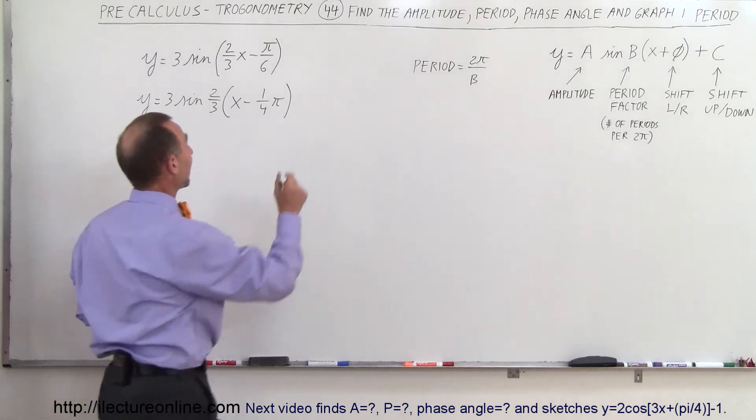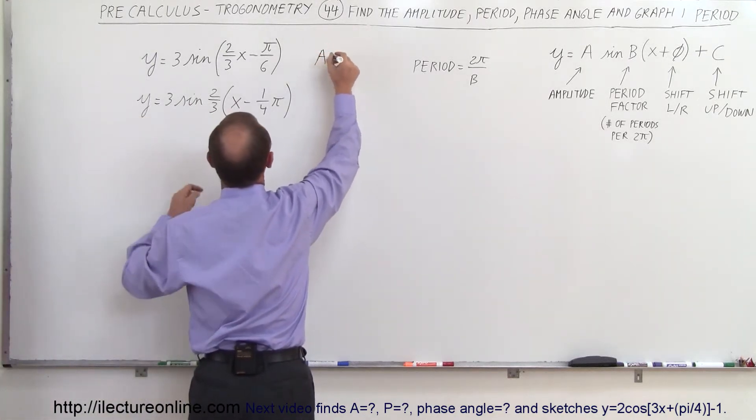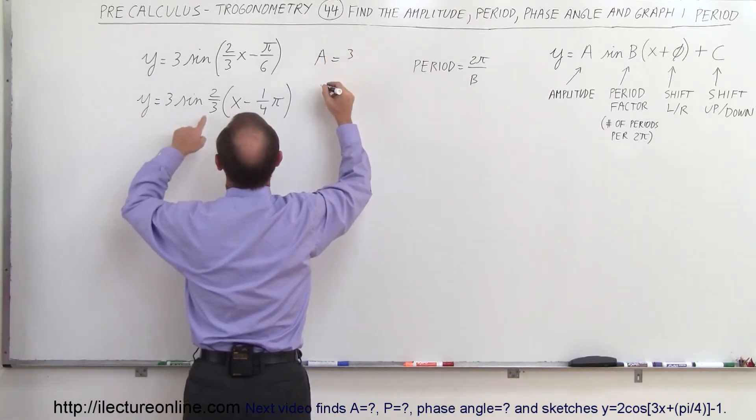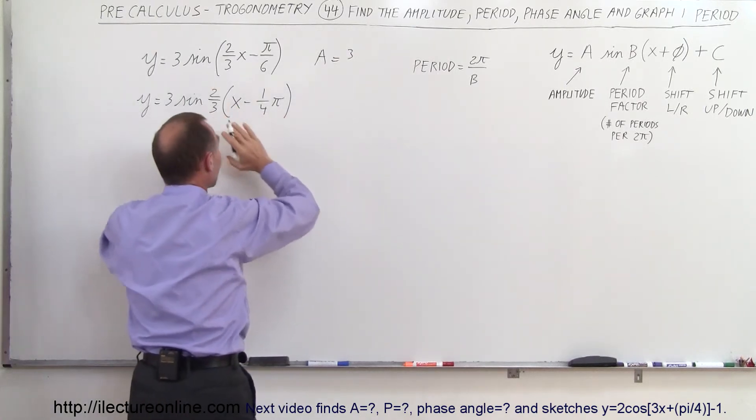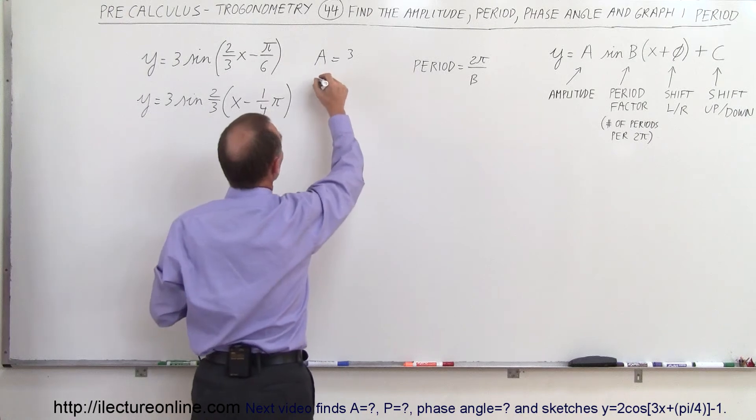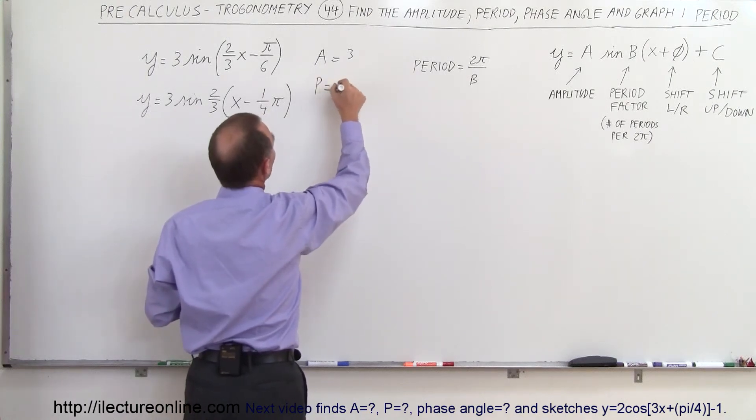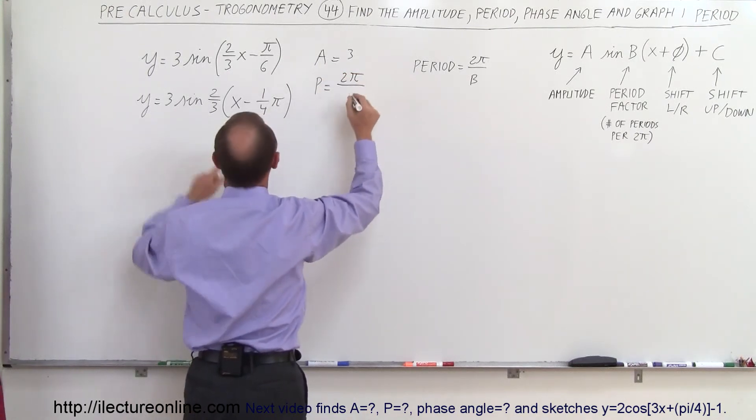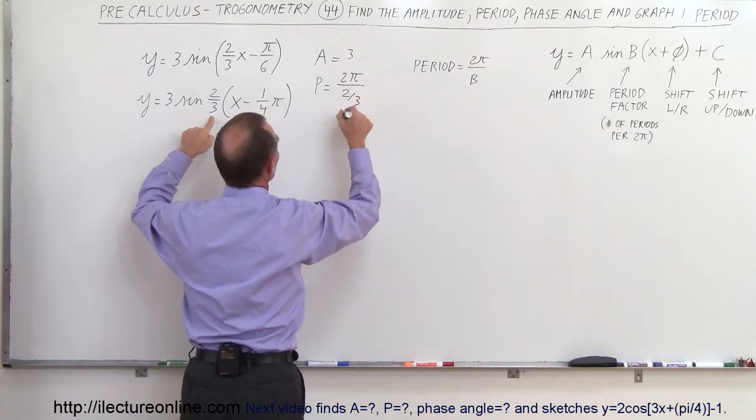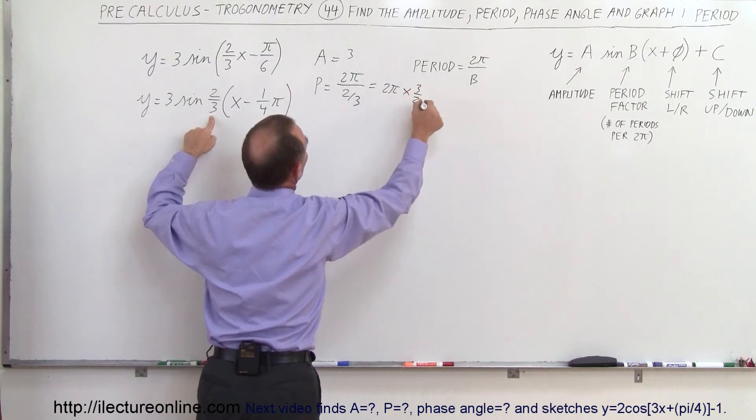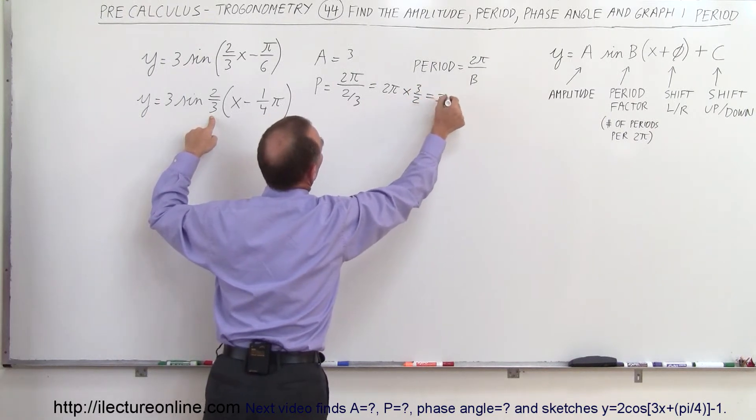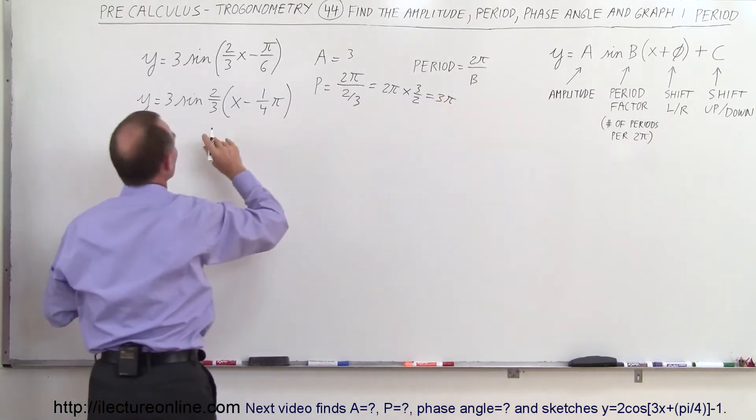Now you can go ahead and find the amplitude. The amplitude hasn't changed, it's still equal to three. But notice the period will be a little bit different. Actually, the period factor is two-thirds, and the period will be equal to 2π divided by the period factor, which is two-thirds. So this is equal to 2π multiplied times three over two, and so this will be equal to 3π.